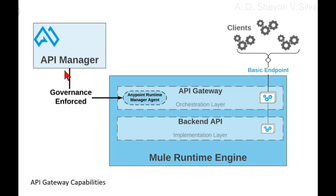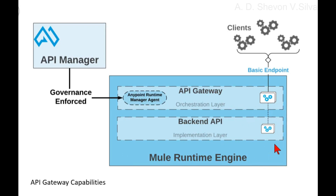Here you can see API Manager is connected to Anypoint Runtime Manager Agent. Governance enforcement is passed from API Manager to Anypoint Runtime Manager Agent in Mule Runtime Engine. You can see the API Gateway and backend API, as well as the orchestration layer and implementation layer.